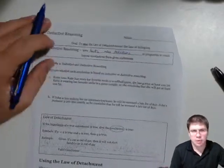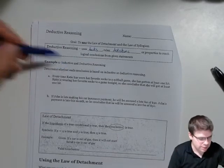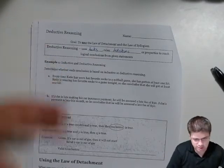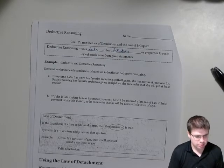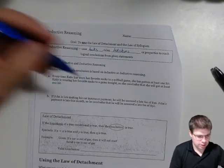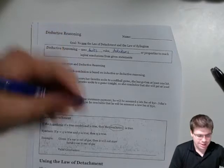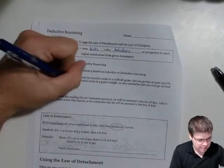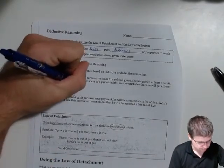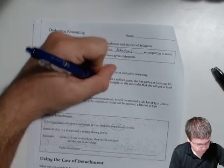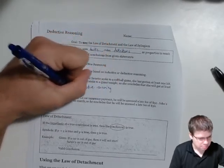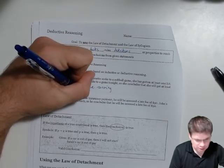So determine whether each conclusion was based on inductive or deductive reasoning. Every time Katie has worn her favorite socks to a softball game she has gotten at least one hit. Katie's wearing her favorite socks to a game tonight, so she concludes that she will get at least one hit. That's observing a pattern, that is inductive reasoning. And that's because it's based on an observed pattern.